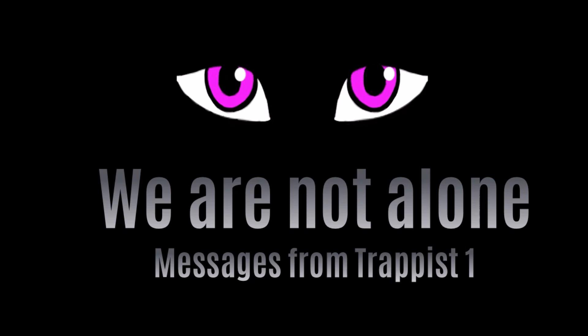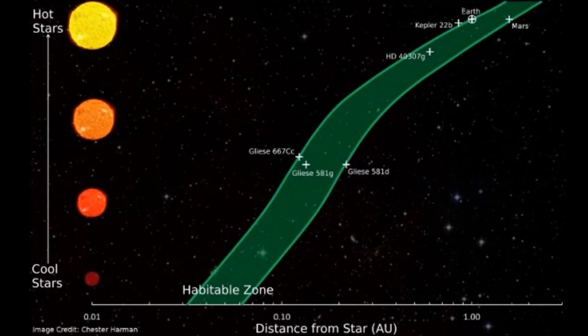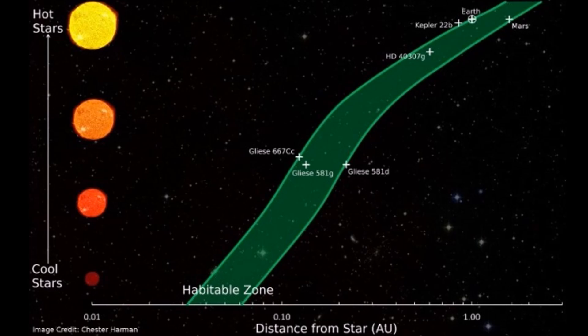For hundreds of years, we believed we were alone in a far corner of our Milky Way galaxy. However, in December 2015, the finding of two habitable exoplanets orbiting Wolf 1061 only 14 light years away changed that belief.